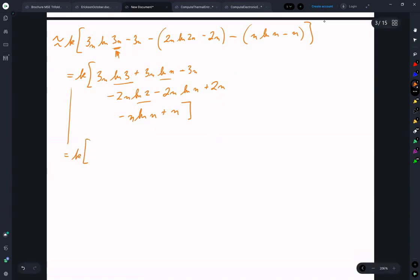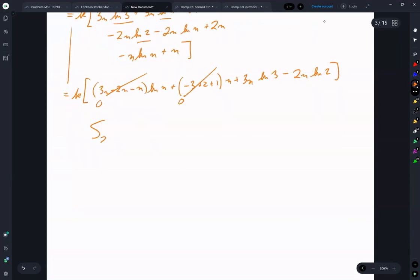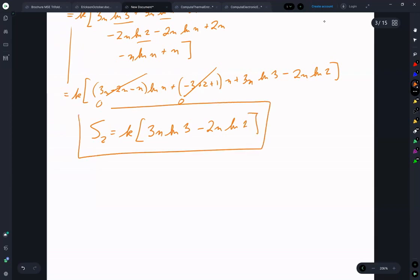K, 3N minus 2N minus N natural log N plus minus 3 plus 2 plus 1 N plus 3N natural log 3 minus 2N natural log 2. So that is 0, that is 0. So here we get S2 is equal to K, 3N natural log 3 minus 2N natural log 2.